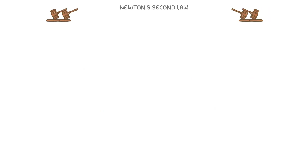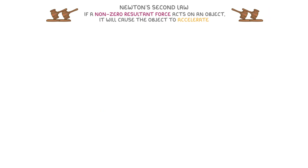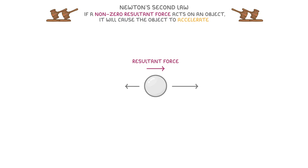In contrast, Newton's second law says that if a non-zero resultant force acts on an object, then it will cause the object to accelerate. Non-zero just means anything other than zero. For example, if we took this particle and drew some unbalanced force arrows on it, we can see that there would be a resultant force to the right, because the right arrow was bigger than the left arrow. So this particle would accelerate to the right.